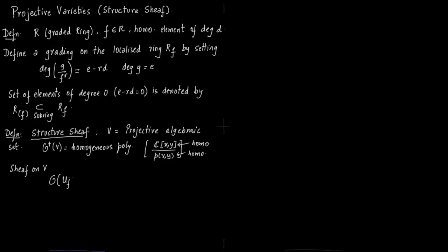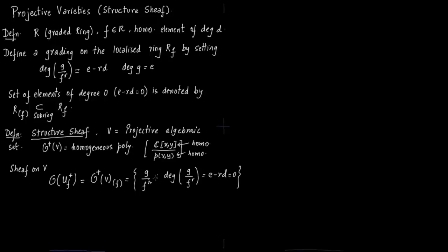We want to define a sheaf on V, so we have to have open sets — open sets like U_+(F). We write U_+(F) because they have to be cut out by homogeneous polynomials. They are nothing but the degree-zero part. You start with the graded ring O_+(V); this grading comes naturally from the degree of the homogeneous polynomials — degree 0, 1, 2 and so on. Then you localize it and take out the degree-zero part. So elements look like G over F^r such that E minus r·D equals 0, where degree of F is D.